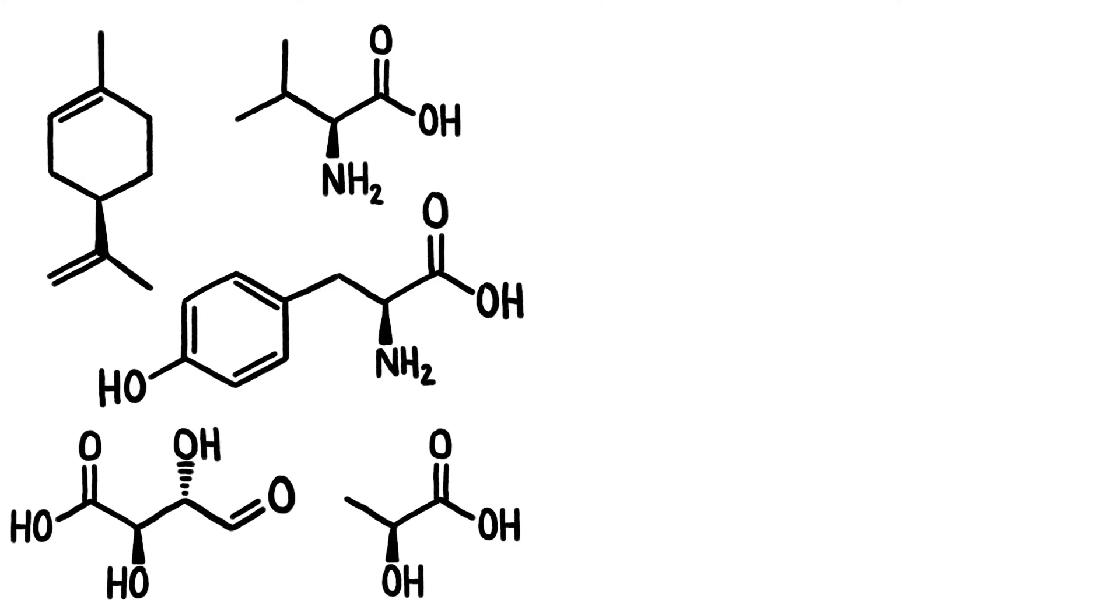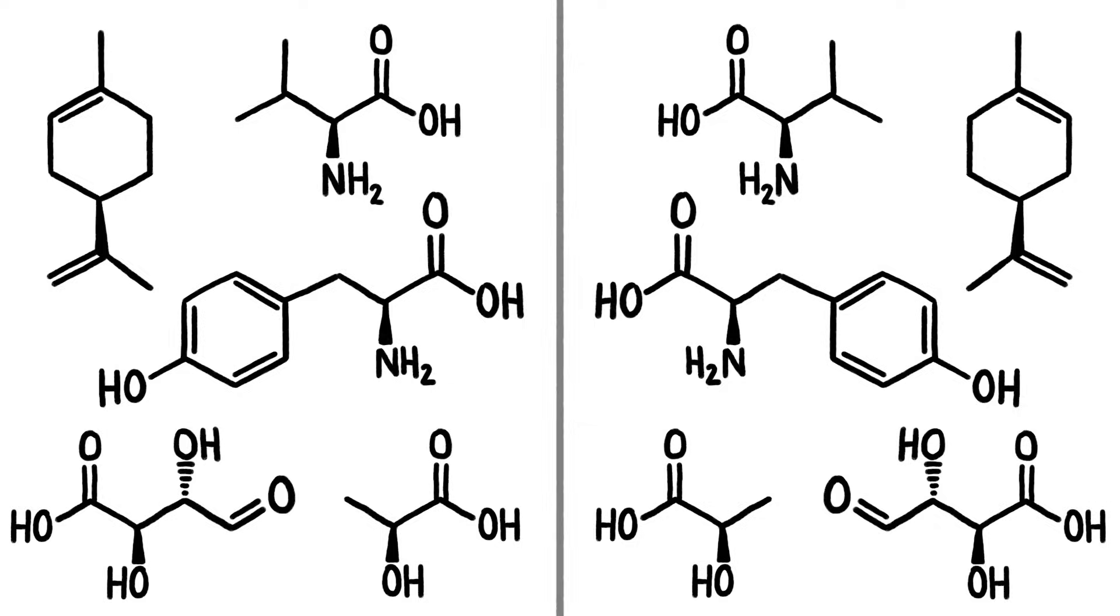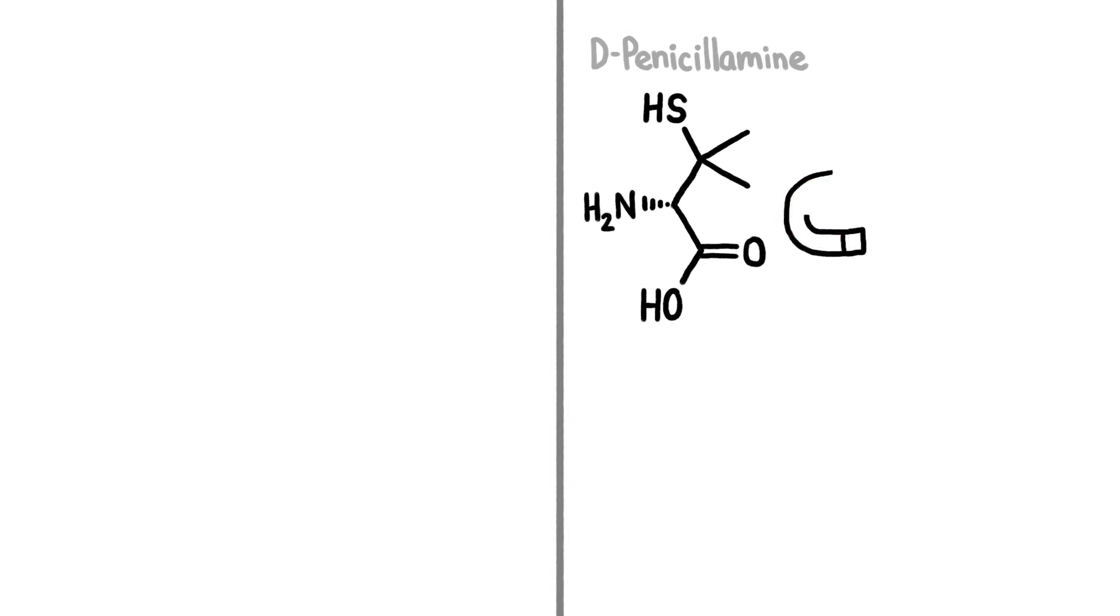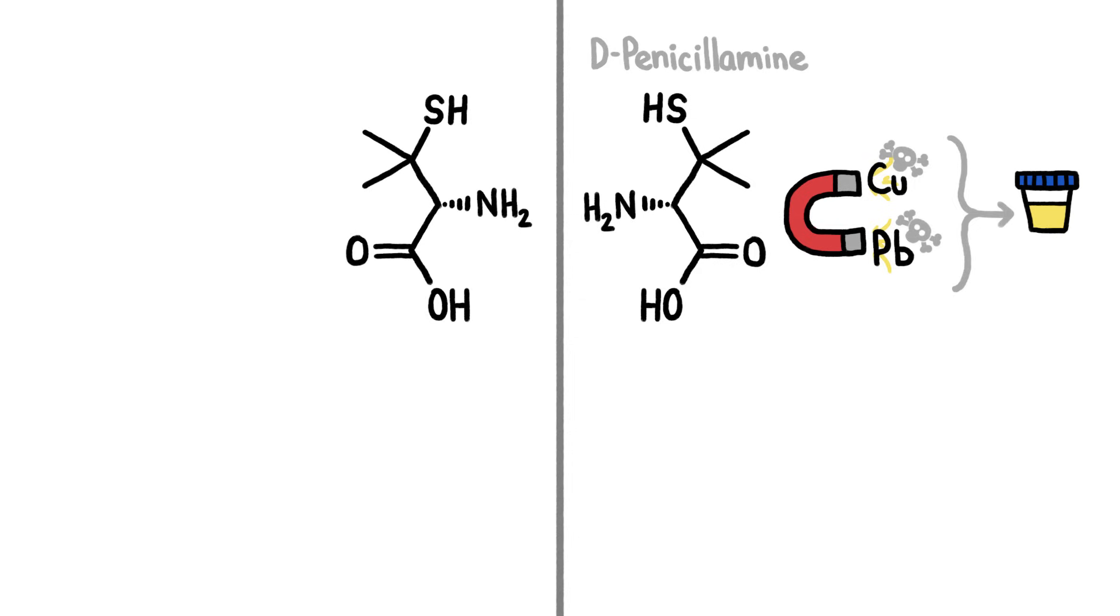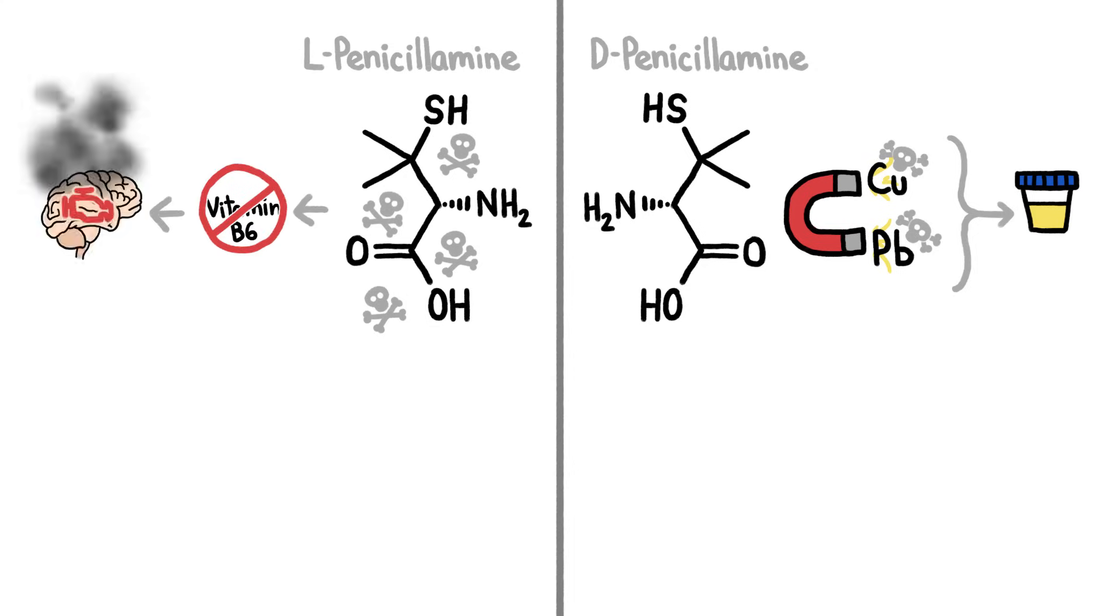Thousands of other molecules also have left and right-handed versions. Right-handed penicillamine binds to toxic heavy metals in the bloodstream and lets you pee them out. On the other hand, left-handed penicillamine is incredibly toxic itself since it blocks the body's ability to use vitamin B6 and causes your brain to malfunction.